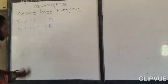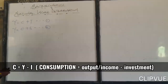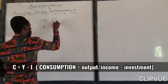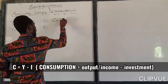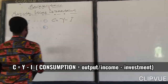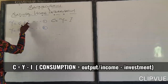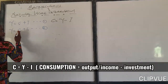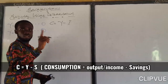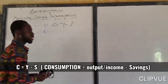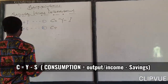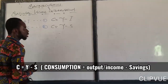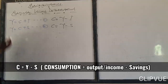From here, we will see that Y is equal to C plus I. So if we want to make C the subject, we get C equal to Y minus I. And over here, if we want to make C the subject from Y equals C plus S, we get C equal to Y minus S. So these are the two equations that we obtain.